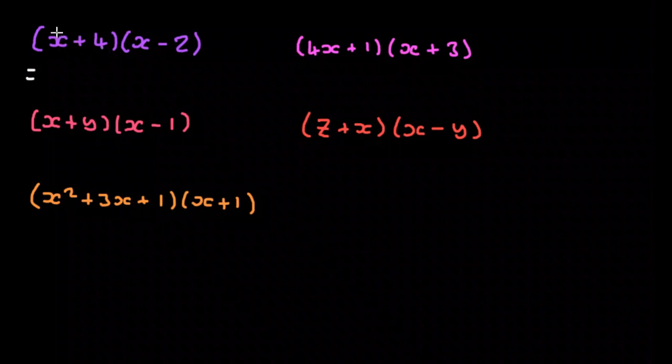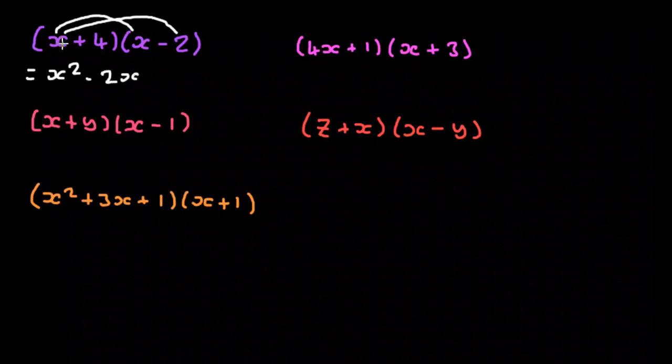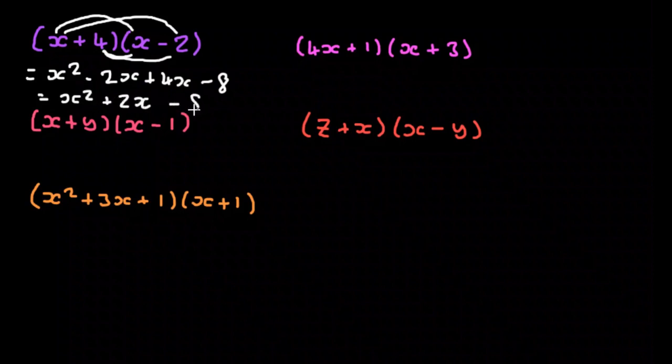So for this first example, we do x times x, that's x squared, and then we add x times minus 2, so that's minus 2x. Now we've multiplied this x with all the terms on this side and we move on to the 4, and we get 4 times x, that's plus 4x, and then we get 4 times minus 2, so that's minus 8. And we can join these together and we get x squared plus 2x minus 8.